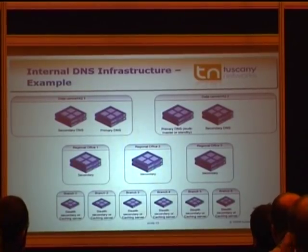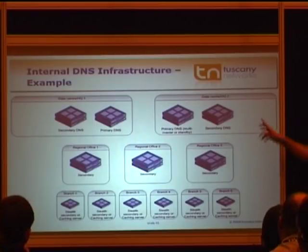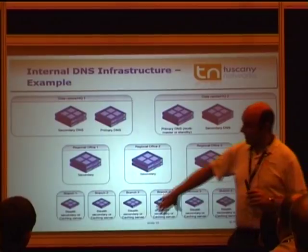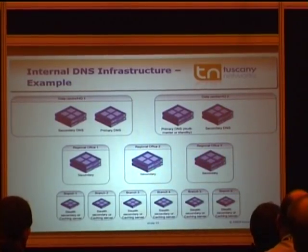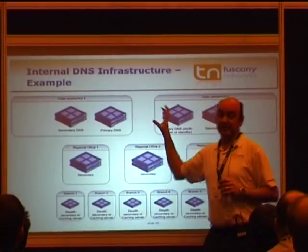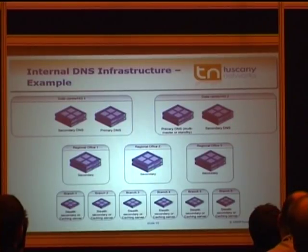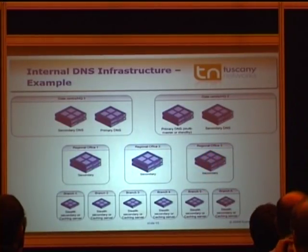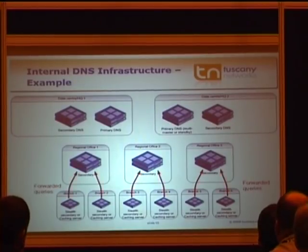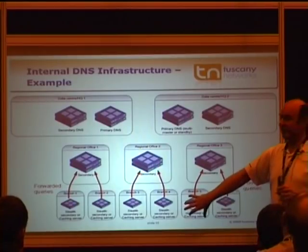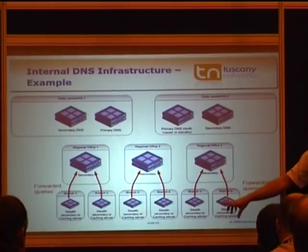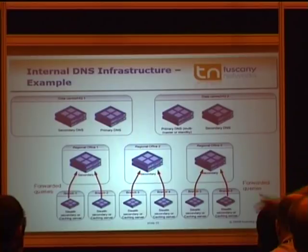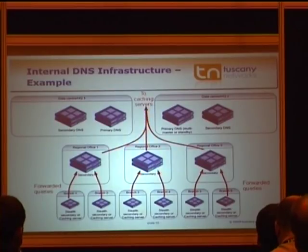This example is for quite a large company — you can see we've got two data centers, some regional offices, and a branch network. You don't necessarily need DNS servers in every location; you might decide to centralize just to the data centers. Branch DNS servers would forward their queries up to the regional secondaries, which could be caching-only servers that don't hold any data themselves. If someone at a branch needs to resolve a name in a different domain, they can do that via the secondary server in their regional office. Internet queries can be forwarded out to the caching servers we discussed.